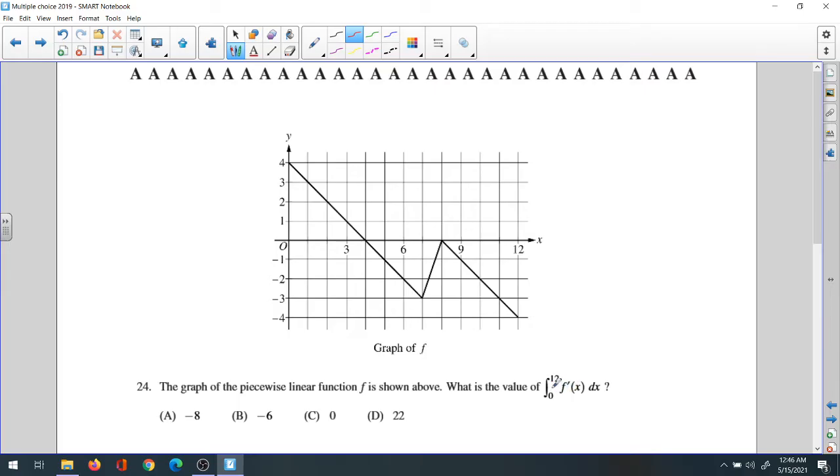When you see the integration of the derivative of a function, they cancel each other, so you come up with the function itself from 0 to 12. It will be f(12) minus f(0).